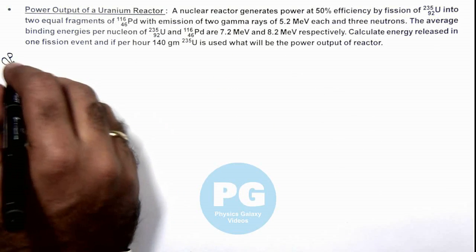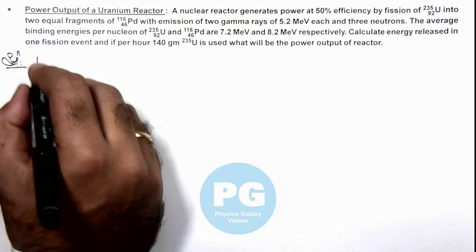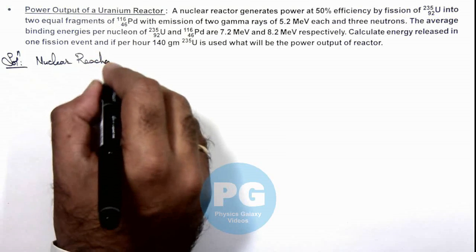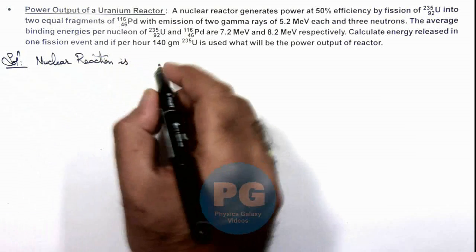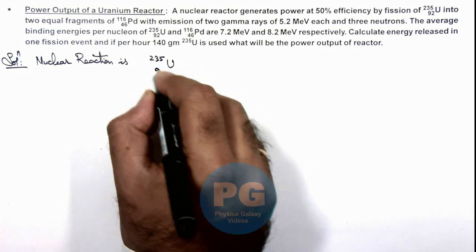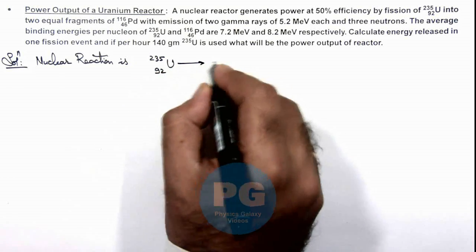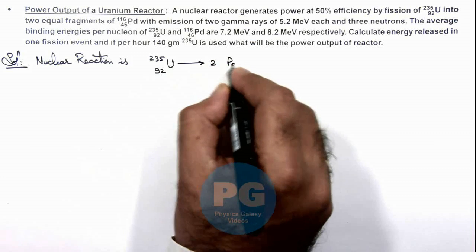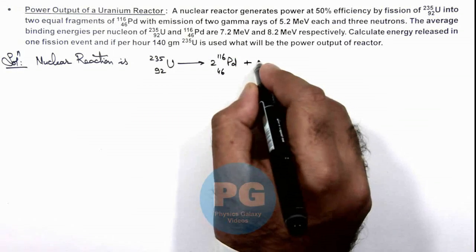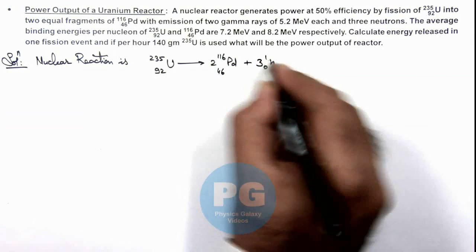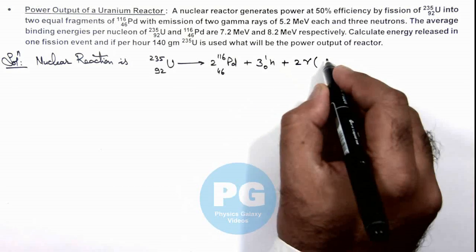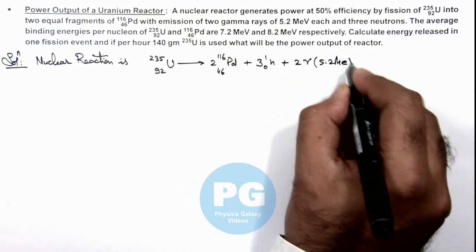In the solution, first we can write the nuclear reaction. The nuclear reaction is: uranium-235 (atomic number 92) gives twice palladium-116 (atomic number 46), plus 3 neutrons are emitted, plus 2 gamma rays each of energy 5.2 MeV are also emitted.